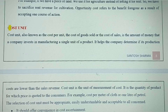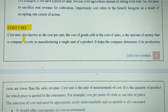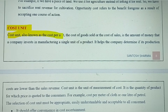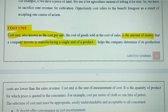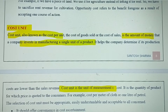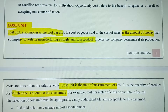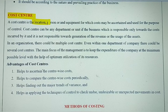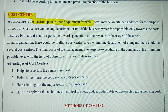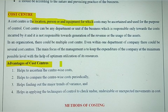Short notes can come from cost unit and cost center. Cost unit is the amount of money a company invests in manufacturing a single unit of product — it is the measurement of cost and the quantity of product for which the price is quoted to the customer, i.e., per unit cost. Cost center can be a location, a person, or equipment for which cost may be ascertained and used for the purpose of controlling cost. If a short note is asked, write the definition, examples, and all advantages of cost center.